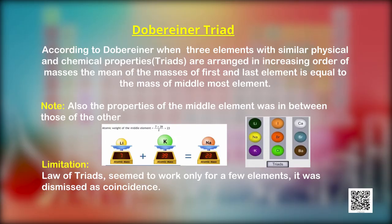What is the history of classification of all the elements known till date? Classification of elements into groups and development of periodic law and periodic table are the consequences of systematizing the knowledge gained by a number of scientists through their observations and experiments. The German chemist John Dobereiner, in early 1800s, was the first to consider the idea of trends among properties of elements. When three elements called triads with similar physical and chemical properties were arranged in increasing order of masses, the mean of the masses of the first and last element equals the mass of the middlemost element. Since Dobereiner's relationship, referred to as the law of triads, seemed to work only for a few elements, it was dismissed as a coincidence.